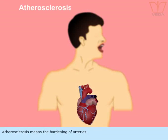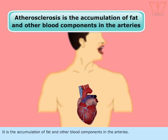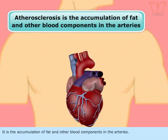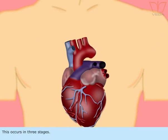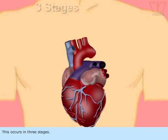Atherosclerosis means the hardening of arteries. It is the accumulation of fat and other blood components in the arteries. This occurs in three stages.